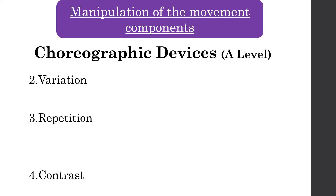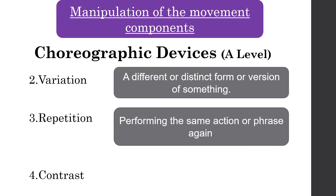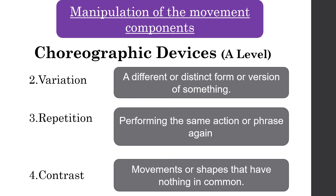Choreographic device number two is variation — changing something, having a variant or a different version of something. Very similar to motif and development, however it doesn't need to keep repeating; it can just be one change or variant. Repetition is simply repeating that action — performing the same action or phrase again. Contrast is movements or shapes that have nothing in common — there might be a moment of complete contrast. Pause the video now and write down these definitions.